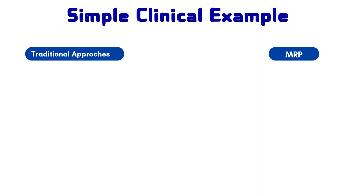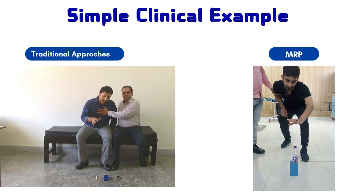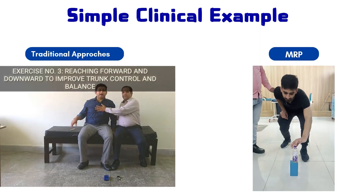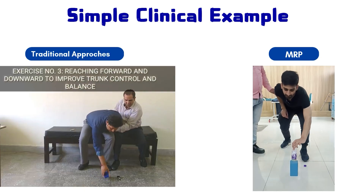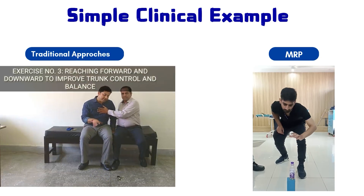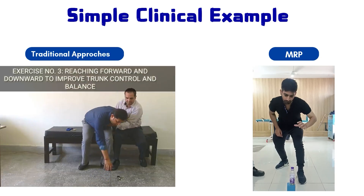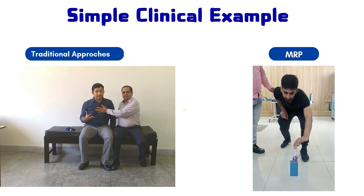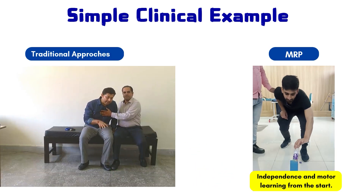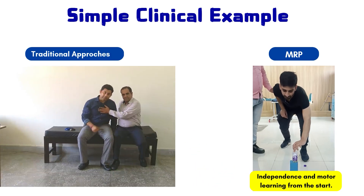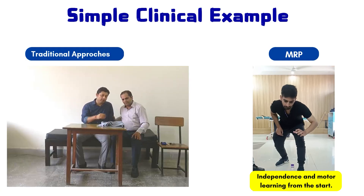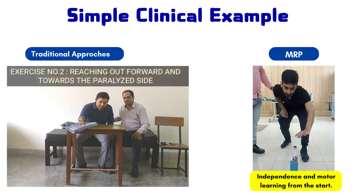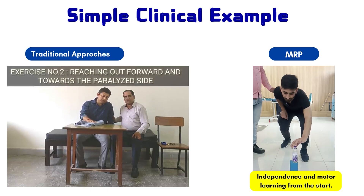Let's take a simple clinical example to understand the MRP concept. In a traditional approach, the therapist supports posture, positions feet, aligns the trunk, and controls the motion manually. In MRP, the therapist observes how the patient stands, identifies what's missing, trains the weak parts, and lets the patient try again with feedback. MRP promotes independence in motor learning from the start.